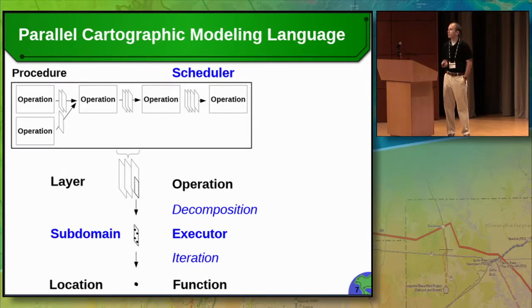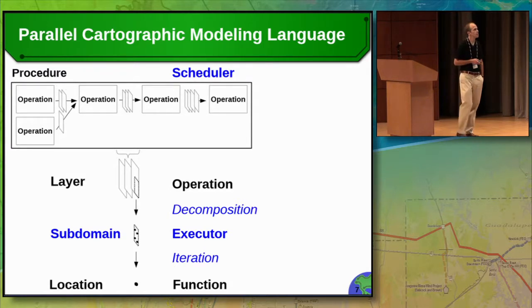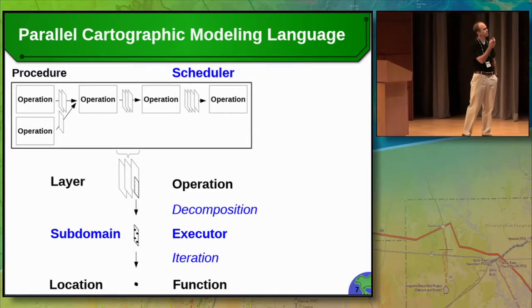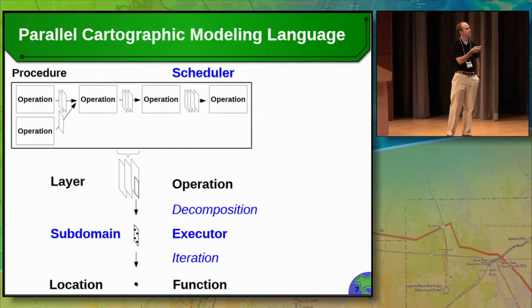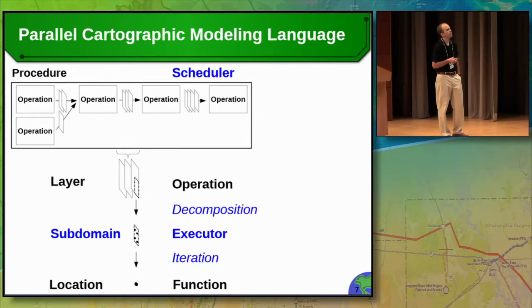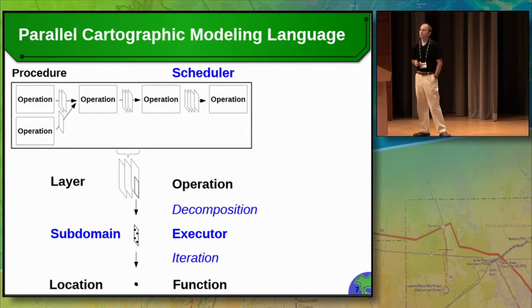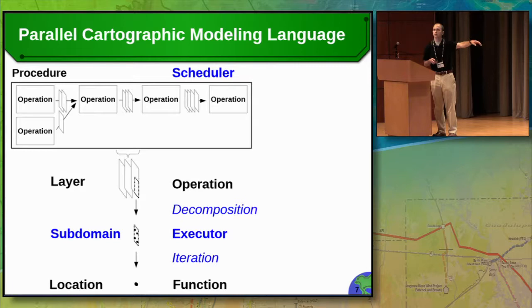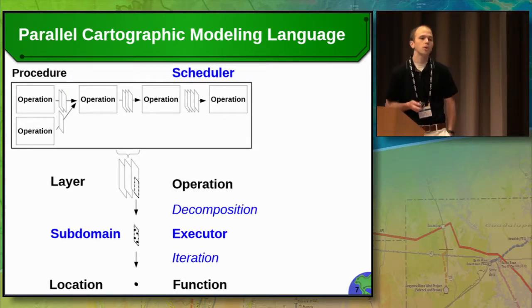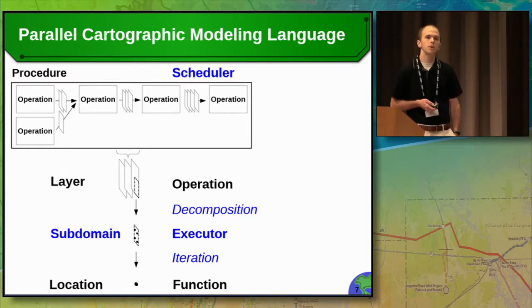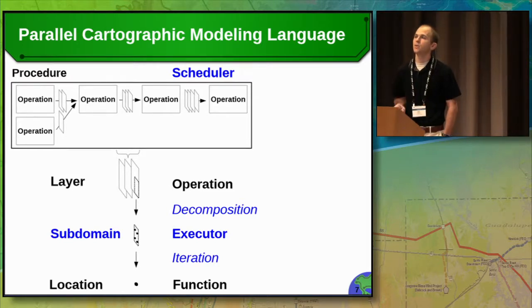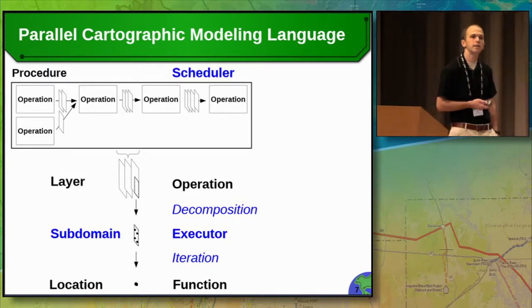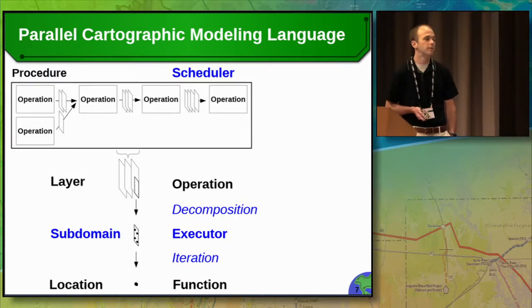We also introduce a number of other model operators. A scheduler manages the parallel execution of a procedure. Decomposition manages how we decompose a layer into one or more subdomains. We have an executor, which manages the processing of subdomains — just as you have an operation applied to a layer and a function applied to a location, you have an executor applied to a subdomain. We also introduce iteration: the ordering in which you process individual locations within a subdomain can influence overall performance, so making this explicit in the language has been very important.